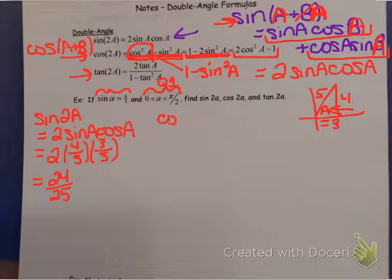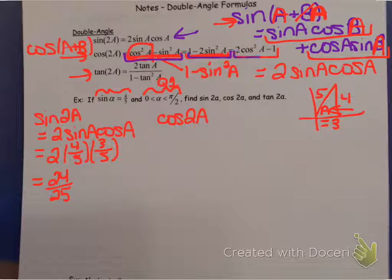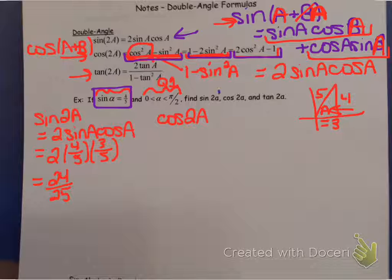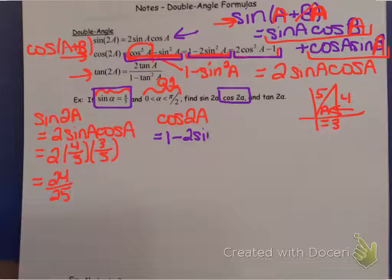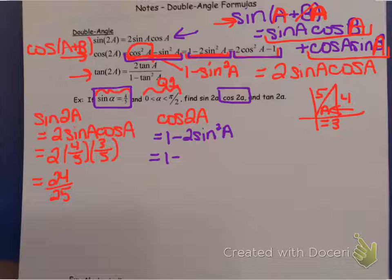I'm also asked to find cosine of 2A. We have three identity choices here. In this case it doesn't matter which one we choose, but a lot of the time if all you're asked for is cosine of 2A, you could avoid drawing a picture altogether by using the second version of the identity - 1 minus 2 sine squared A - because all it requires is the sine value, which was given.